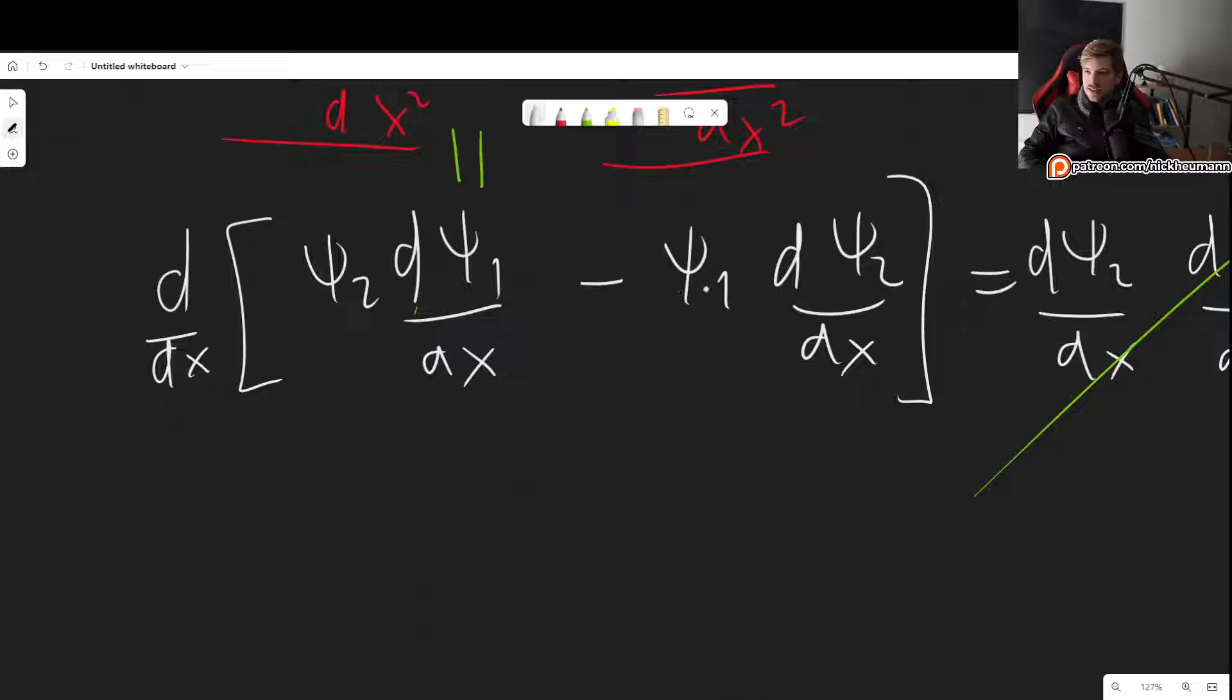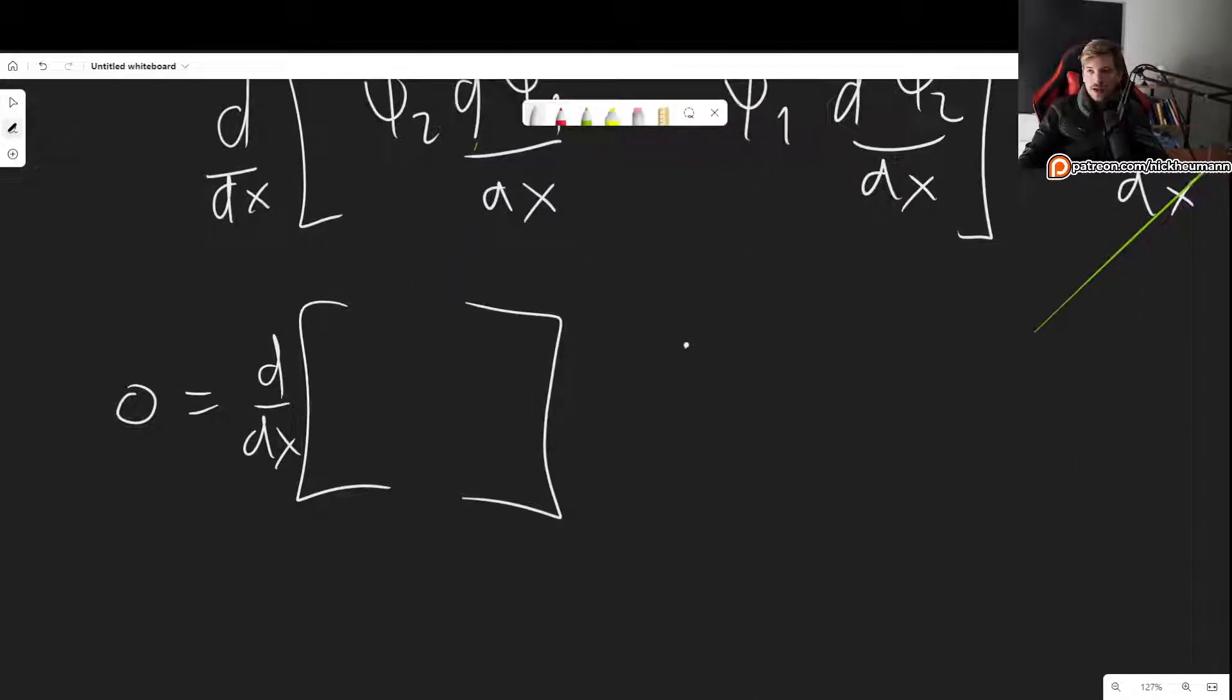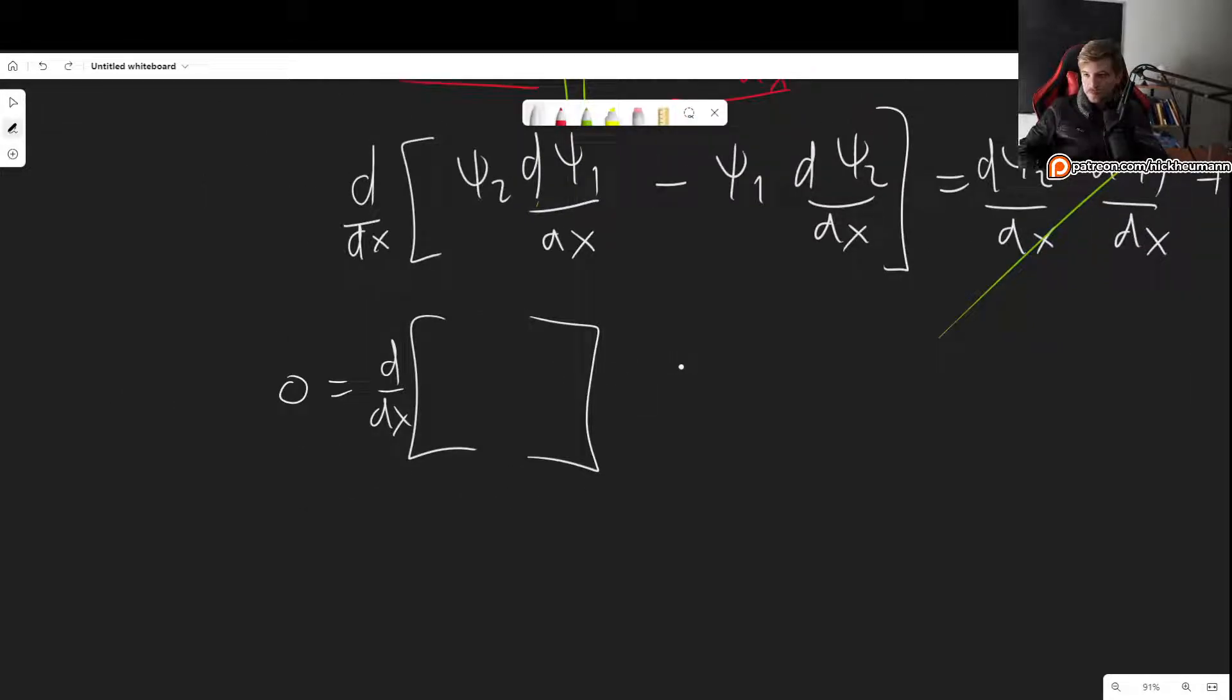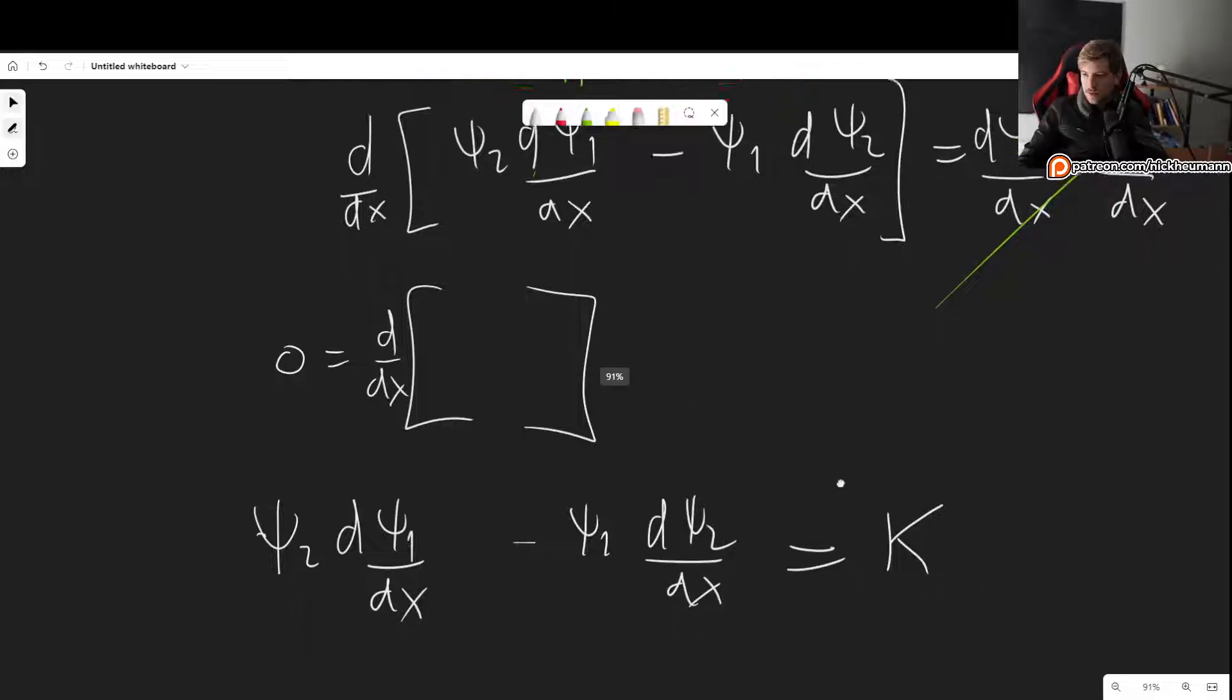So for that reason, we can now continue working with this. And this means, since this is equal to 0, we have 0 is equal to the derivative of what we have in here. That means that the interior of the bracket has to be a constant with respect to x. So that means that ψ₂ dψ₁/dx - ψ₁ dψ₂/dx has to be equal to some constant.